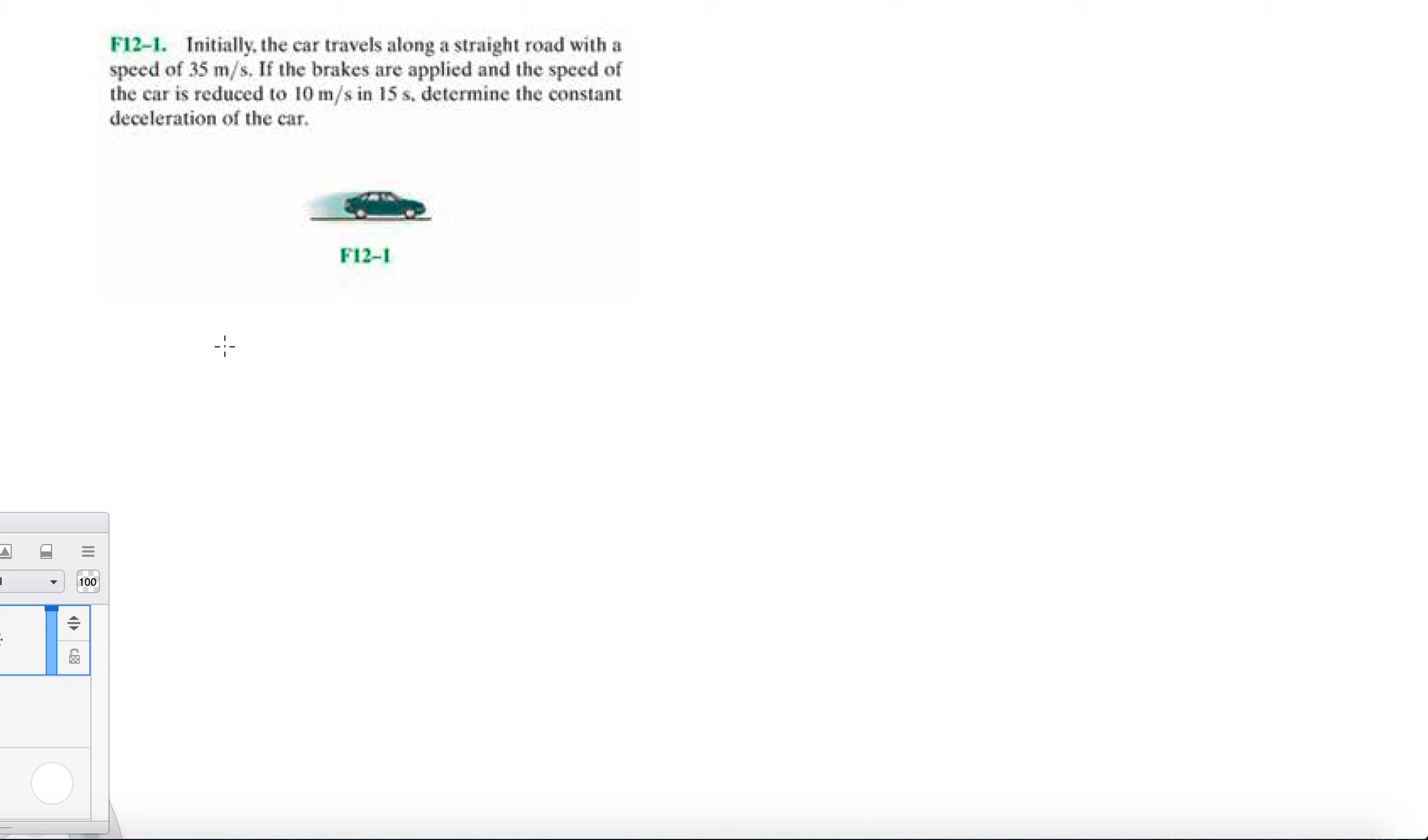Let's get started with this. Initially, the car travels along a straight road with a speed of 35 meters per second. If the brakes are applied and the speed of the car is reduced to 10 meters per second in 15 seconds, determine the constant deceleration of the car.